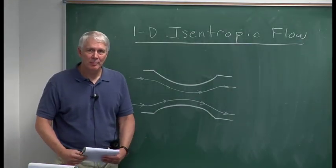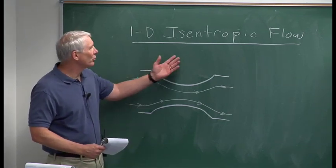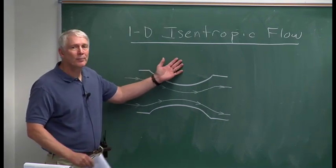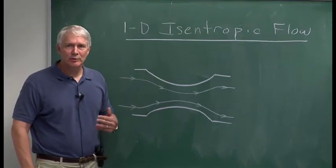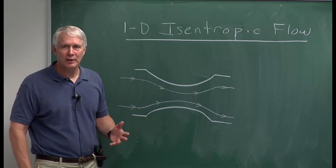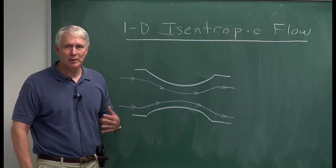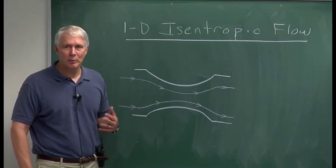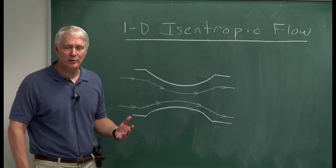Today we're going to talk about 1D isentropic flow. The flow in nozzles, diffusers, channels and things like that are what we typically model as what we call 1D or one-dimensional.